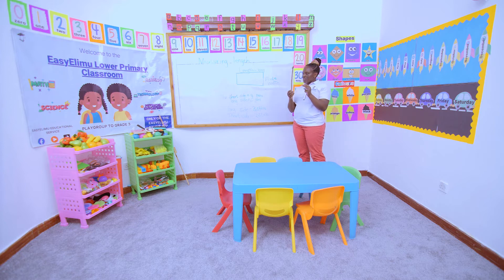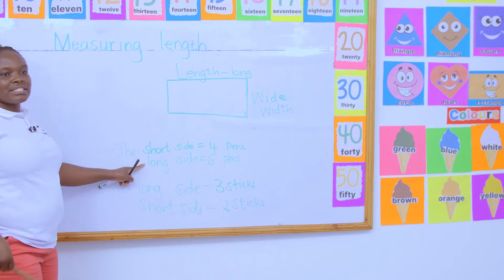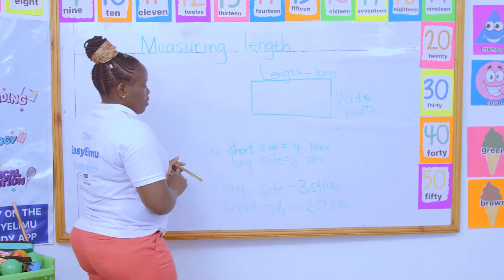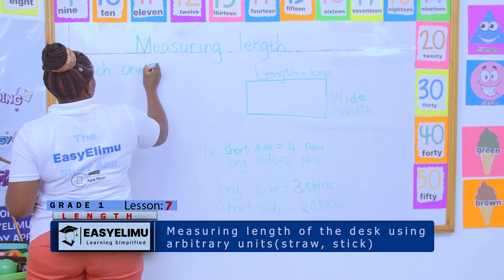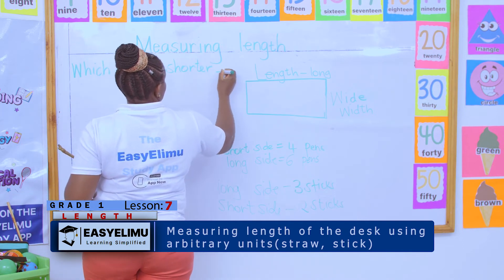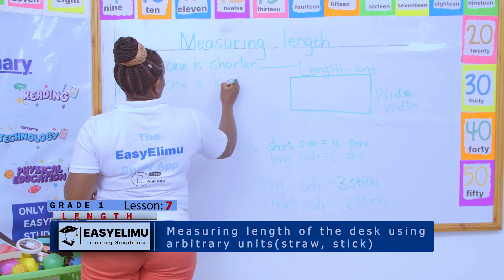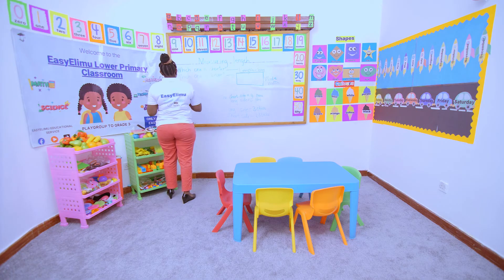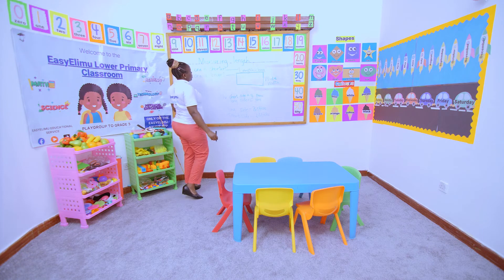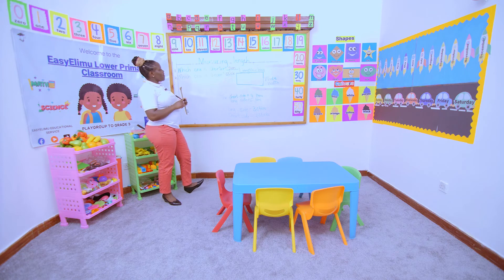Which one is longer — the pen or the stick? When you compare, look at the long side. If the long side gives us six pens, and when you use a stick the long side gives us three sticks, which one has taken more to give us the answer? We took more when measuring using the pen. So when they ask which one is shorter: the pen is shorter, and the stick is longer. The stick is longer than the pen, or the pen is shorter than the stick.